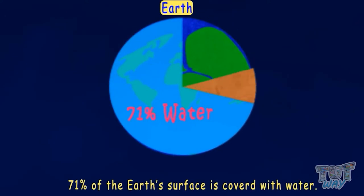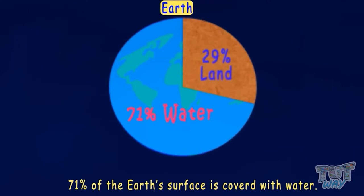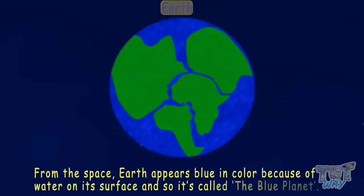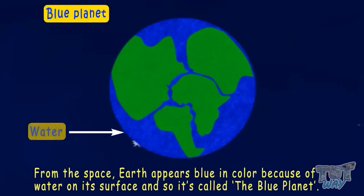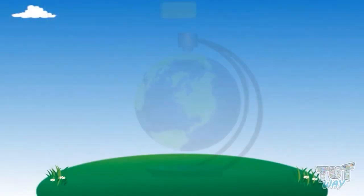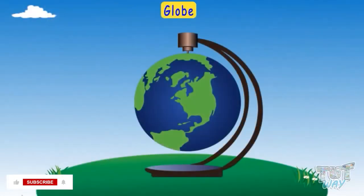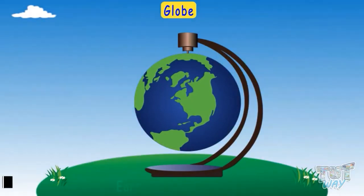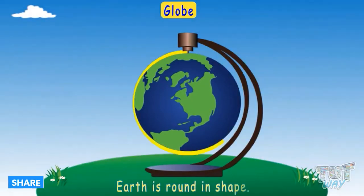The rest is covered with land. From space, the Earth appears blue in color because of the water on its surface, and so it's called the Blue Planet. A globe is a model of our planet Earth.